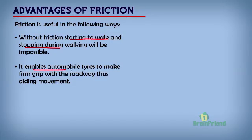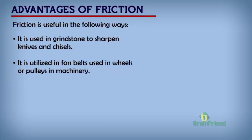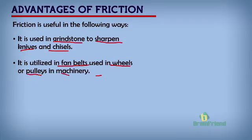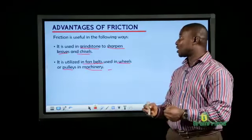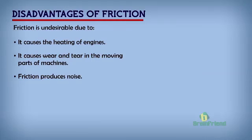Friction enables automobile tires to make a firm grip with the roadway to aid movement. Without friction, automobile tires will not be able to make a firm grip — there will be a lot of skidding and moving off the road. We also need friction to enable our knives and chisels to be sharpened at the grindstone, which has a rough surface. Friction can also be seen where fan belts are put on wheels or pulleys in machinery — what keeps the fan belts in contact with pulleys and wheels is friction.